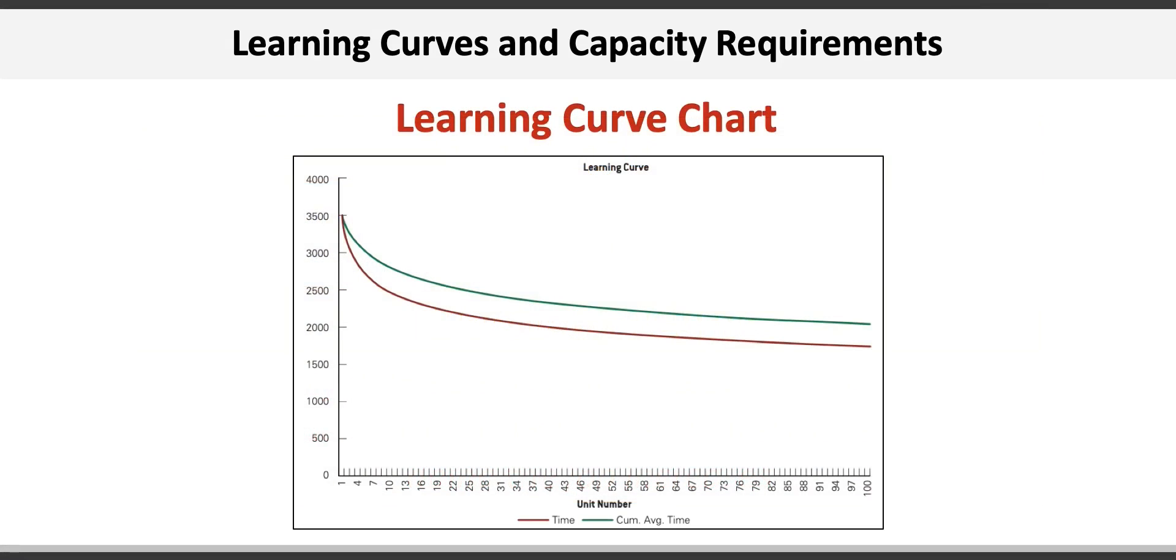Here's an example of a learning curve chart, which shows that the first unit of a product takes 3,500 minutes to manufacture or assemble. After the 50th unit, the time drops to about 2,000 minutes and continues to drop, albeit at a slower, decreasing rate, eventually leveling out.